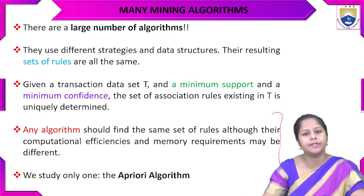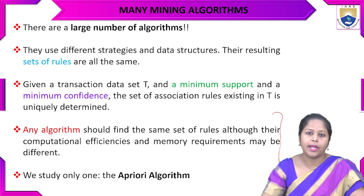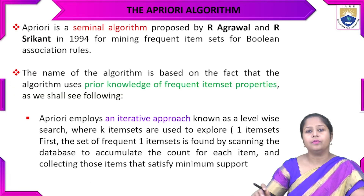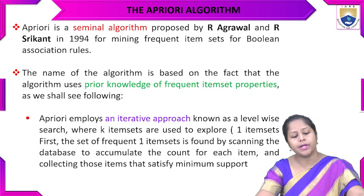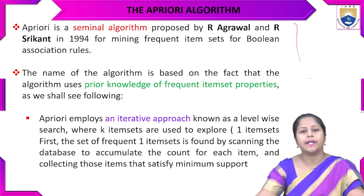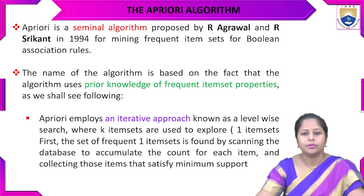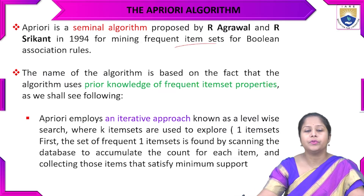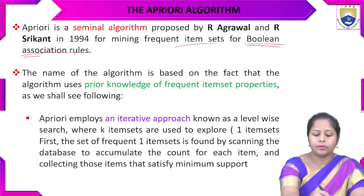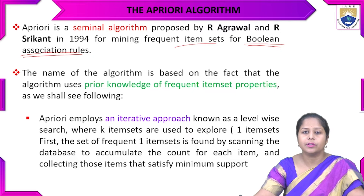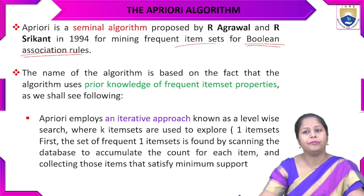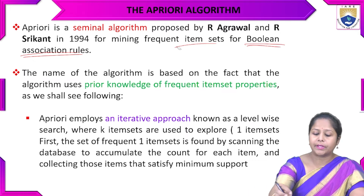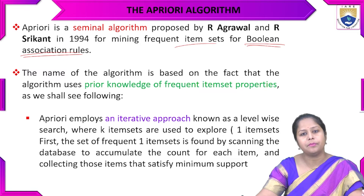For that, we are going to study the first algorithm — the Apriori algorithm. The Apriori algorithm is a seminal algorithm proposed by R. Agrawal and R. Srikant in 1994. They proposed this seminal algorithm for mining frequent item sets of Boolean association rules. The name of the algorithm is based on the fact that the algorithm uses prior knowledge of the frequent item set property.